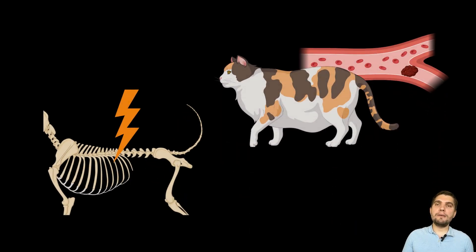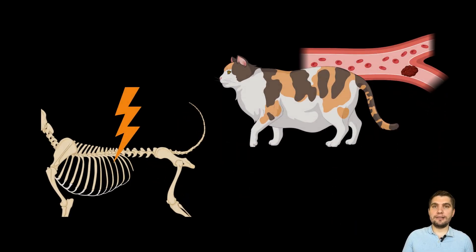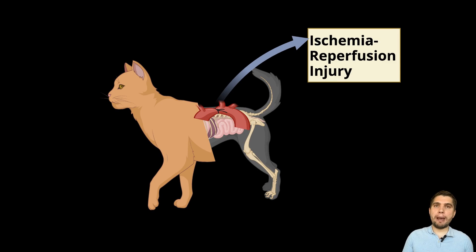Clinical signs often mimic other critical emergencies, such as feline aortic thromboembolism or traumatic spinal cord injury. Another serious issue following entrapment-related ischemia is reperfusion injury, which occurs when blood flow returns, causing further tissue damage, cell death, and sometimes sudden respiratory distress.